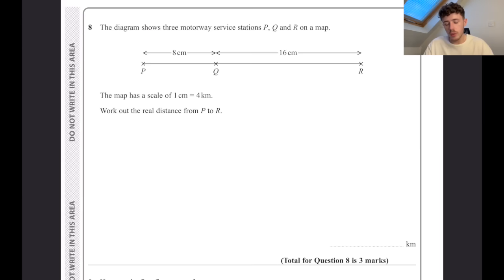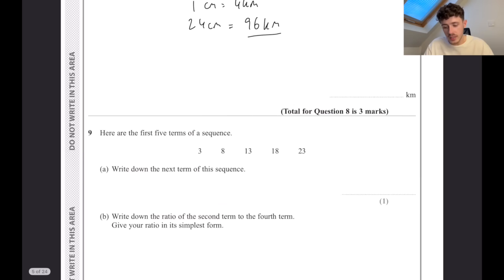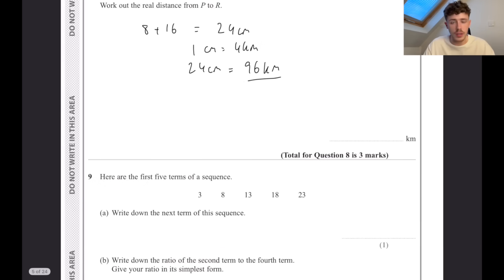The diagram shows three motorway service stations P, Q, and R on a map. One centimetre equals four kilometres. Work out the real distance from P to R. So 8 plus 16 equals 24 centimetres, and 24 centimetres, if one centimetre equals four kilometres, is going to be 96 kilometres. That's our final answer. Again, this is a calculator test, so feel free to use a calculator if you want to.